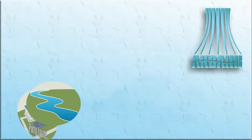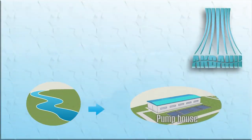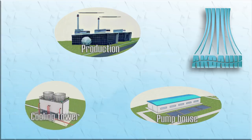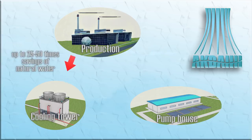A circulating water system is a system in which water is used as the refrigerant for cooling heat exchange equipment. The use of cooling towers saves natural water from 25 to 50 times compared with once-through cooling and prevents thermal pollution of water bodies.